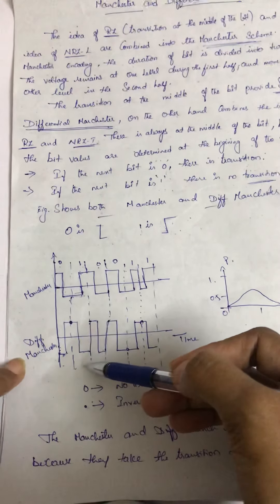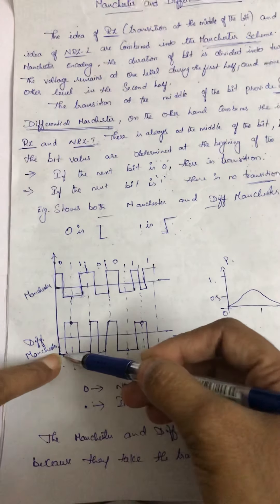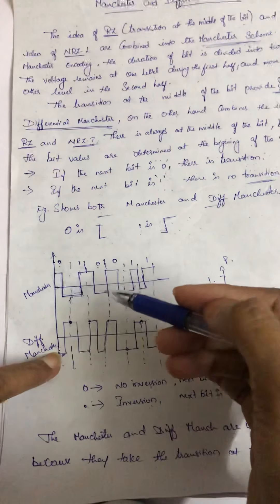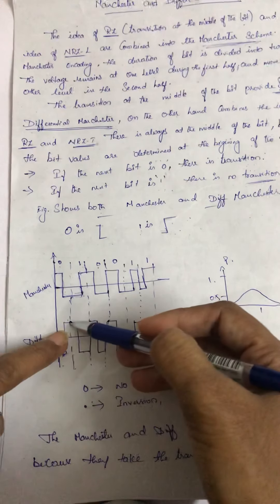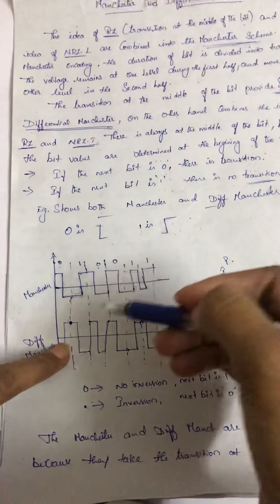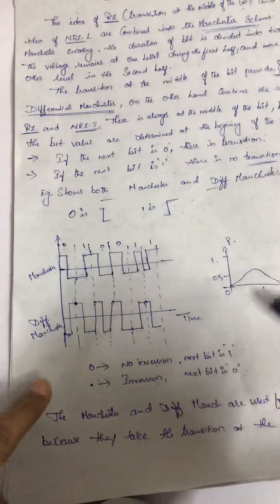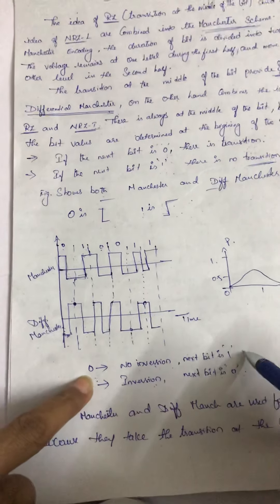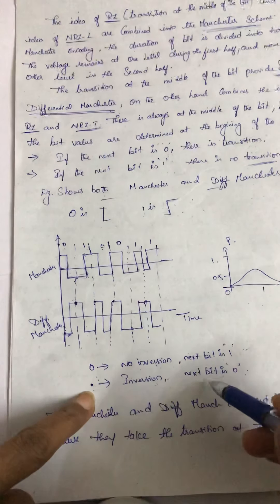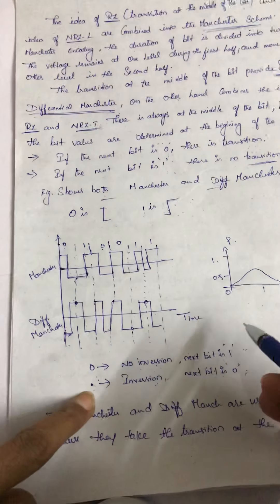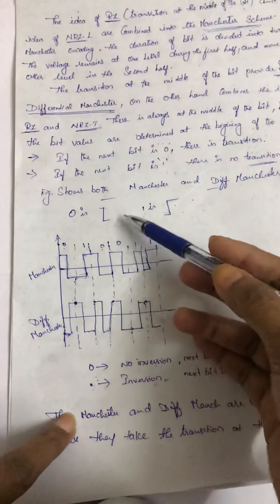In case of Differential Manchester, this is 0. 0 indicates no inversion takes place. And the next bit is 1 — see, this is 1. This dot indicates what? The next bit is 0 and inversion takes place. So 0 means no inversion and the next bit is 1. This dot indicates inversion takes place and the next bit is 0. So this is the difference between Manchester and Differential Manchester.